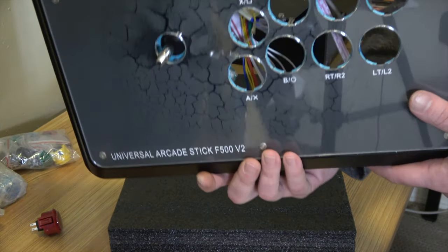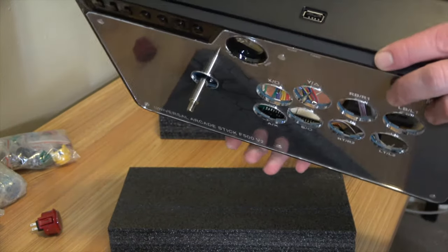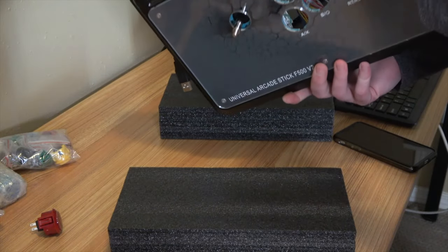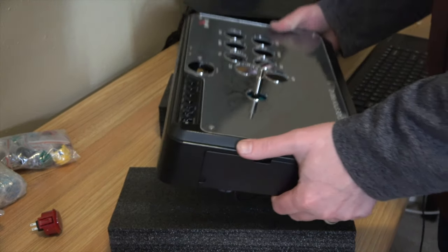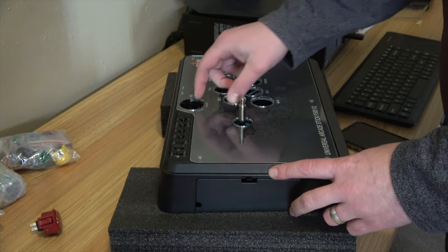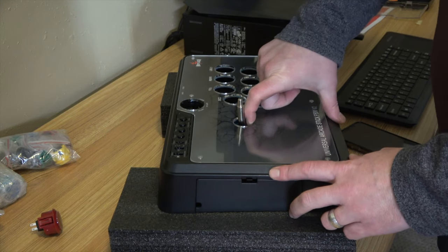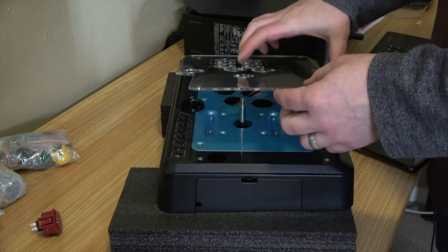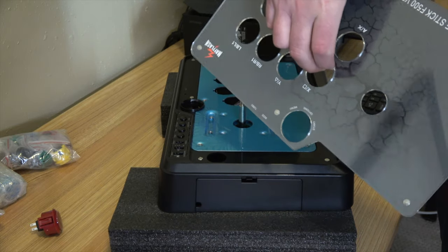So here is our empty husk of a system. Now, I'm going to go ahead and take this part off too, because I need to switch the artwork out before I can start putting the buttons back in. It's just held on by some magnets and it pops up.